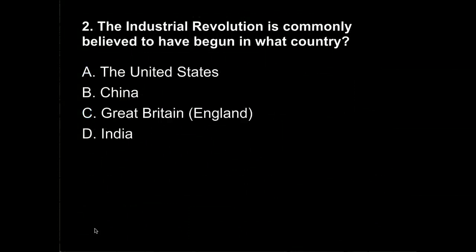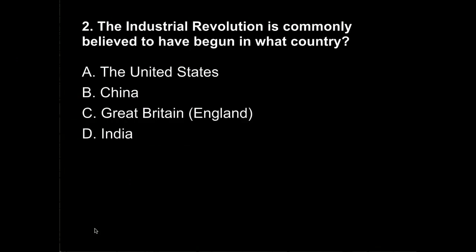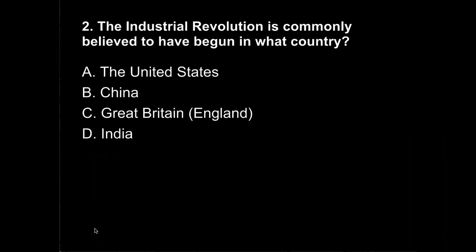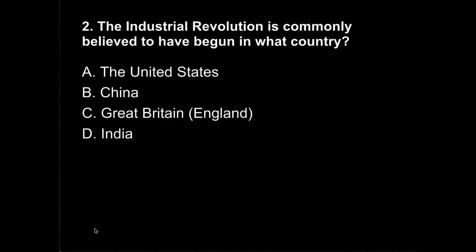Question 2. The Industrial Revolution is commonly believed to have begun in what country? Was it A, the United States, B, China, C, Great Britain, also known as England from the reading, or D, India?